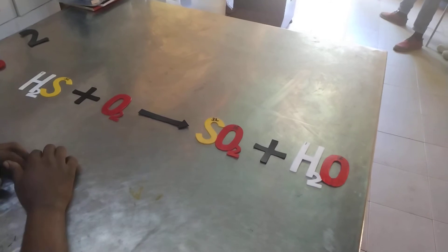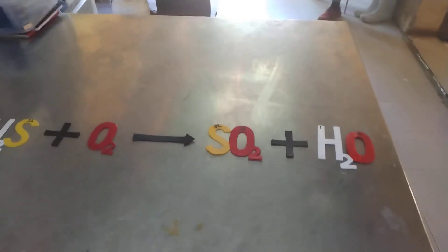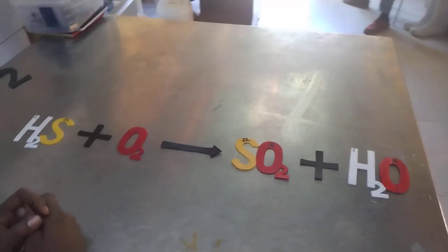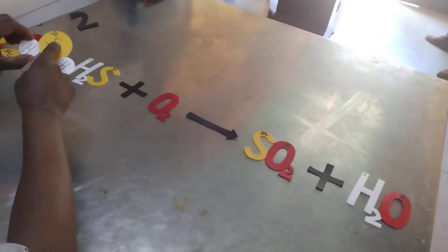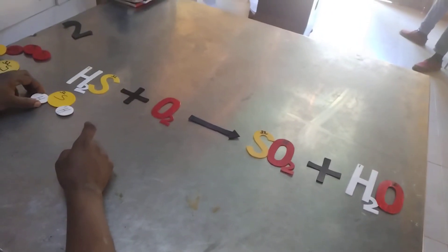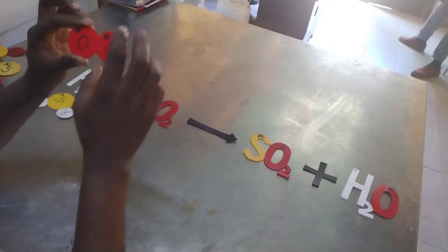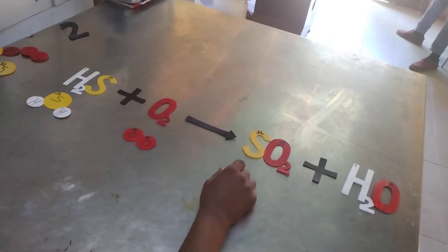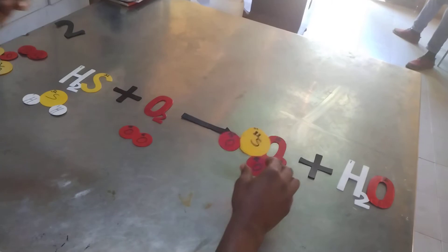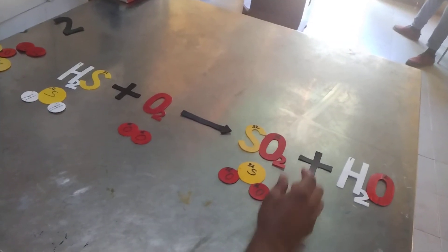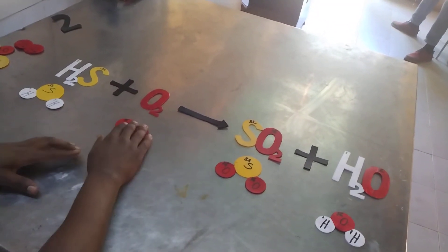To balance this reaction we are going to utilize models that show us individual atoms involved. We represent hydrogen sulfide as one sulfur atom and two hydrogen atoms. Oxygen is represented as a molecule having two atoms. Sulfur dioxide is represented with one sulfur atom and two oxygen atoms. Water is represented as one oxygen and two hydrogen atoms.